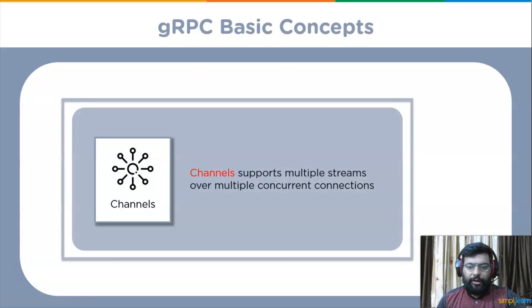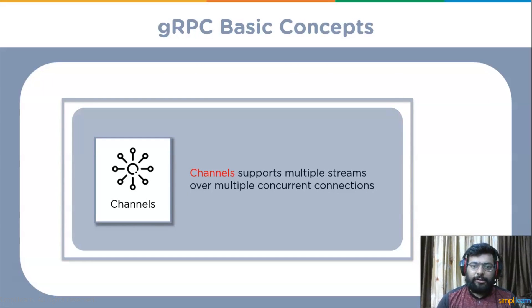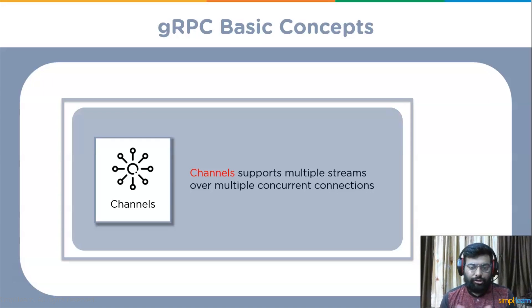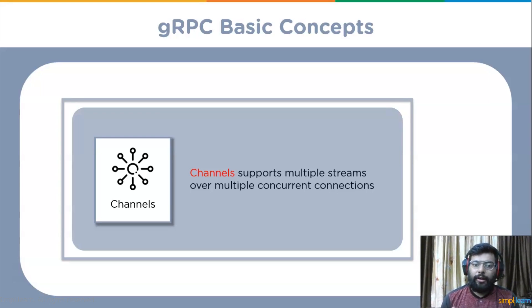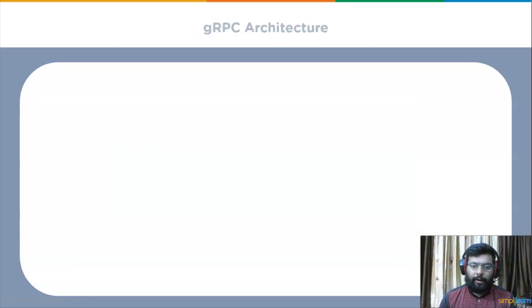Channels are another key concept. HTTP/2 streams allow many simultaneous streams on one connection. Channels extend this concept by supporting multiple streams over multiple concurrent connections. They provide a way to connect to the gRPC server on a specified address and port and are used in creating a client stub.